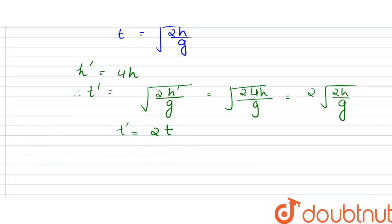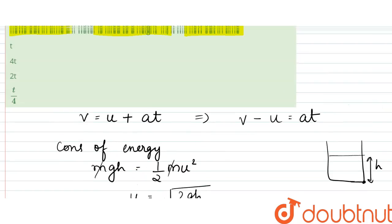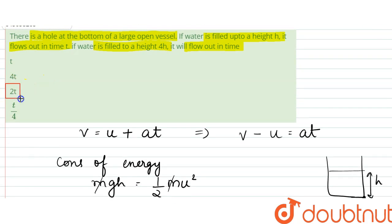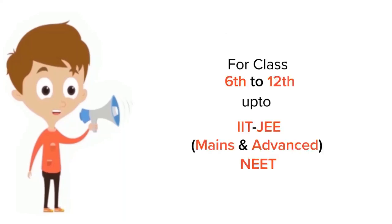So t' = 2t. That is all, option C is our answer. Thank you.